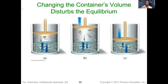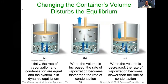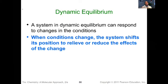In this picture representation, we can see how changing the space in the container — increasing the space increases the vaporization process, decreasing the space increases the condensation process — but eventually those molecules will re-establish that equilibrium. When a system is in dynamic equilibrium, it responds to changes that are induced, and the system will shift its position to relieve or reduce any of those effects associated with the change.